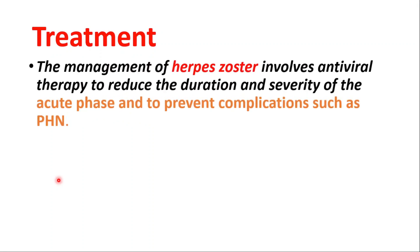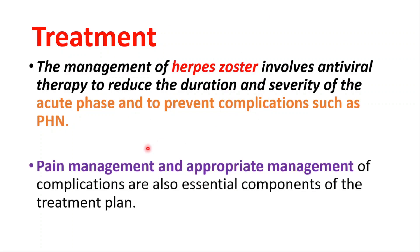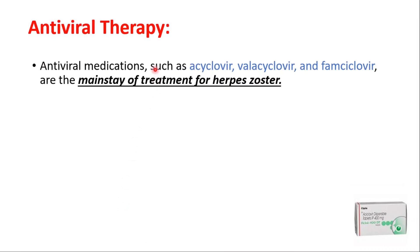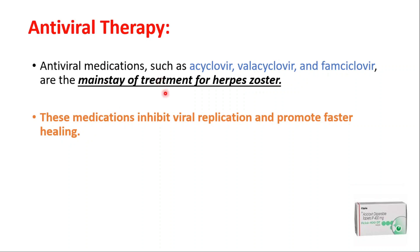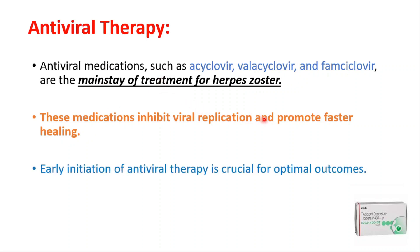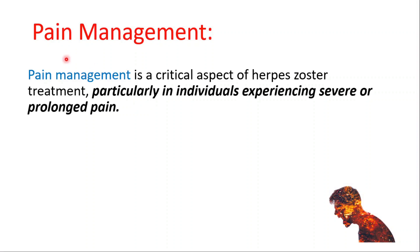Now let's talk about treatment. Management involves antiviral therapy to reduce the duration and severity of the acute phase and to prevent complications such as post-herpetic neuralgia. Medications like acyclovir, valacyclovir, and famciclovir are the mainstay of treatment for herpes zoster. These medications inhibit viral replication and promote faster healing; early initiation of therapy is crucial for optimal outcomes.